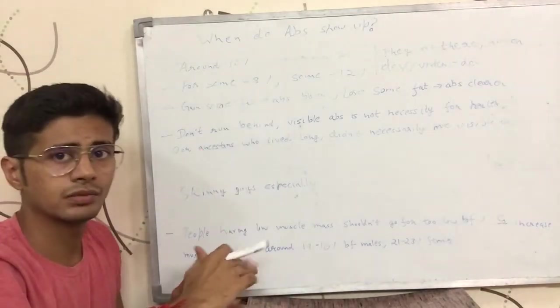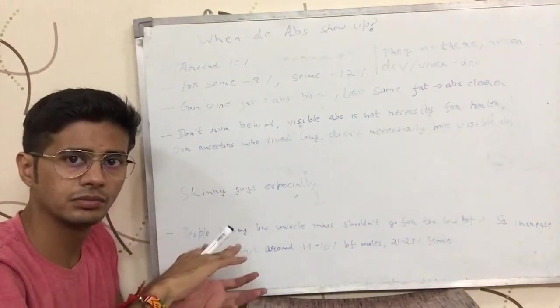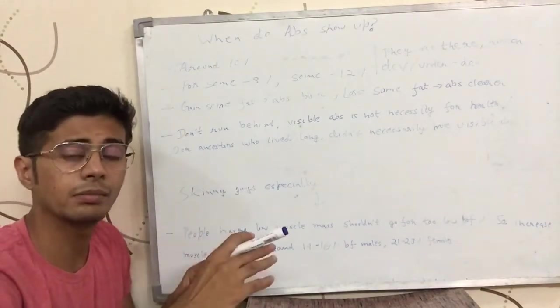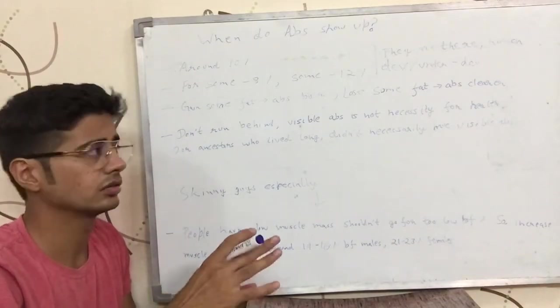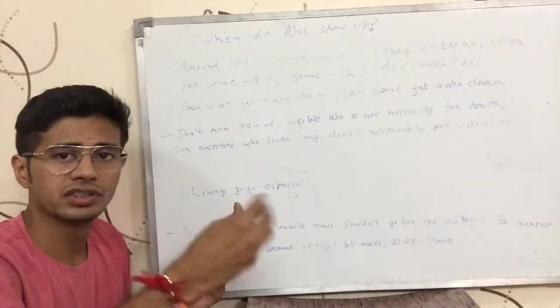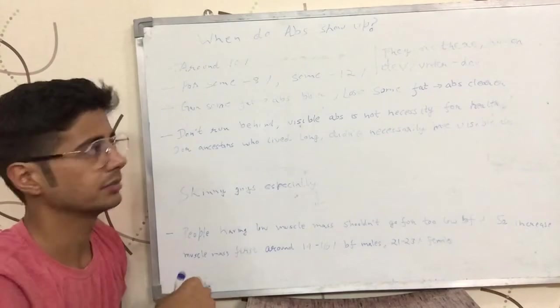And around 17 to 18% body fat, the female should have the abs showing up. For some it can, the number can be 15 or 16, for some it can be 18 or so. But they would see as much as a female's body can show the abs.